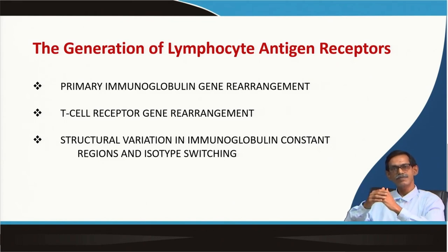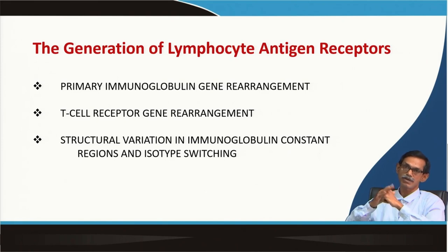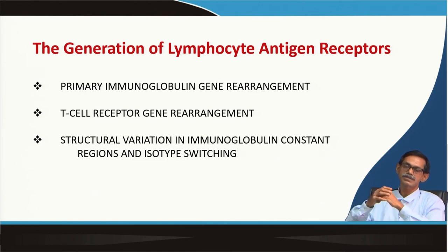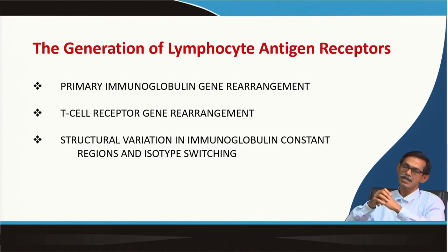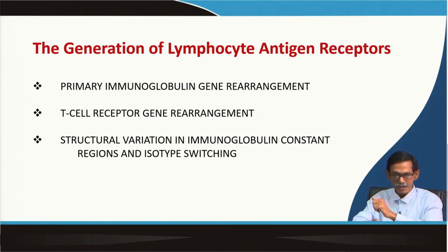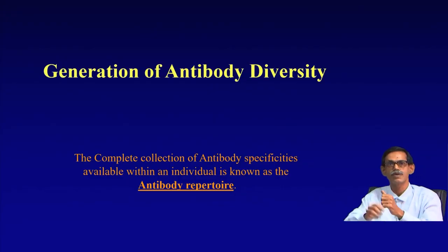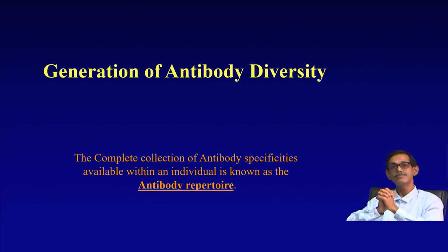In the upcoming few lectures we are going to discuss the generation of lymphocyte antigen receptors. I will mostly focus on primary immunoglobulin gene rearrangement and their variation, which is almost equally applicable for T cell receptor gene rearrangement. If there is anything special for T cell receptor we will discuss that as well. As the last part, we will see isotype switching and how different immunoglobulin isotypes are formed. Today I will start with immunoglobulin gene rearrangement for generation of antibody diversity.